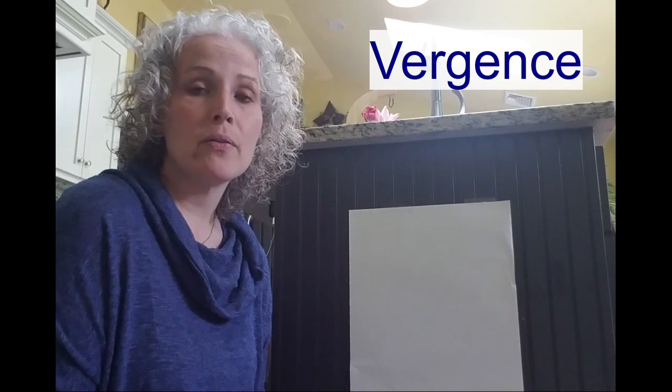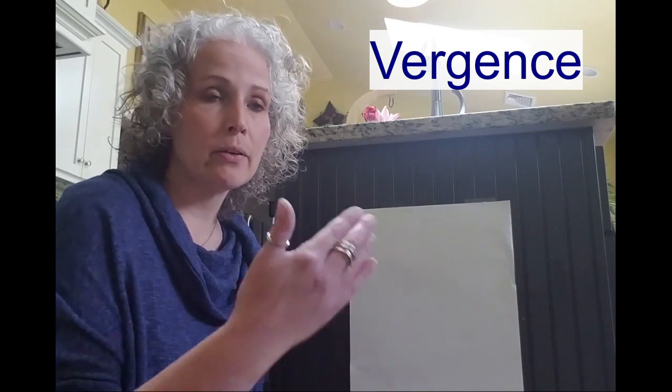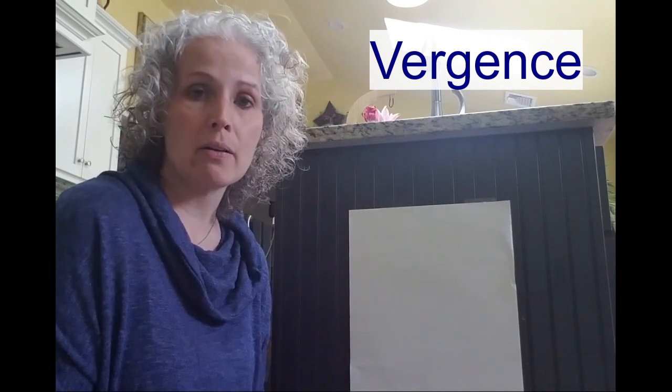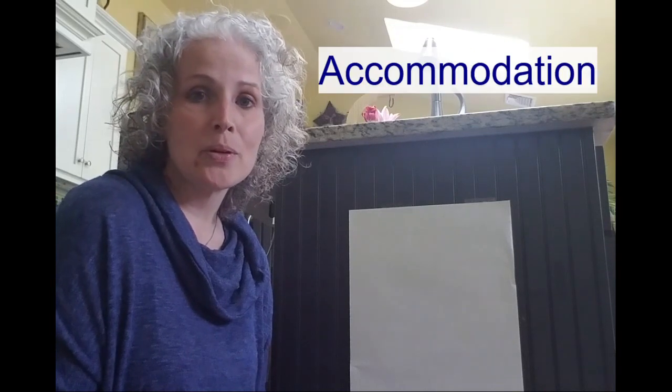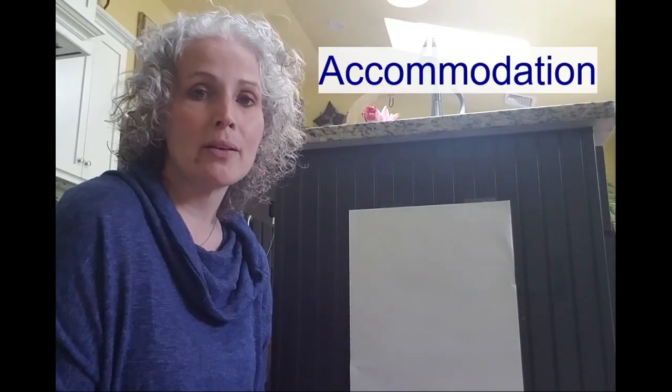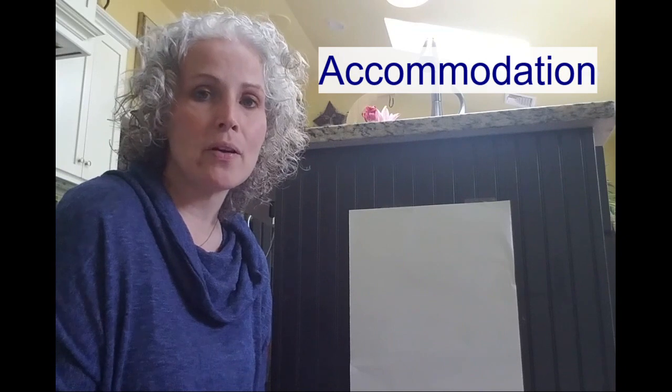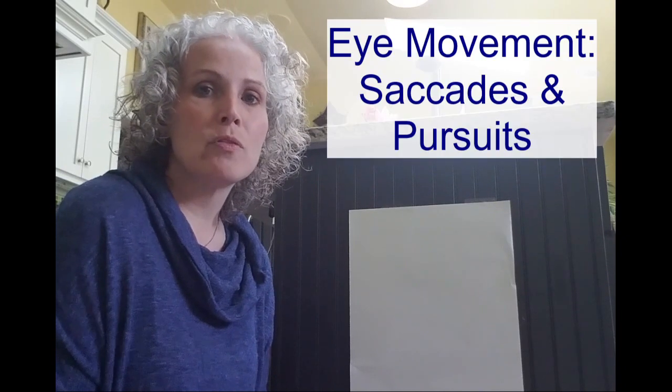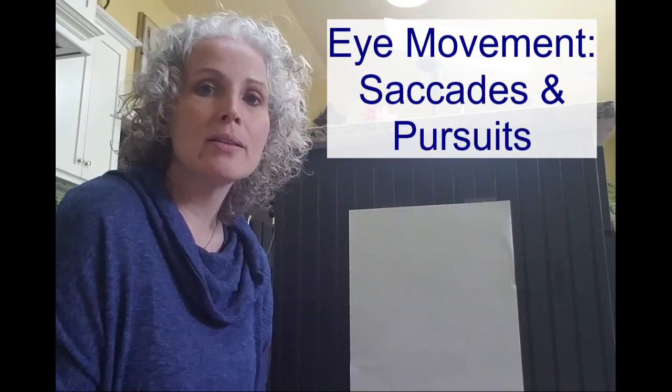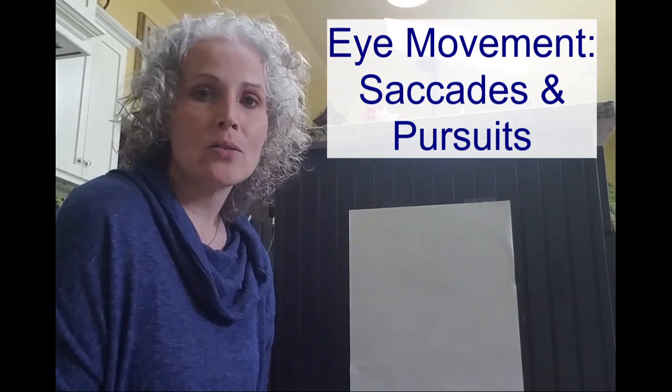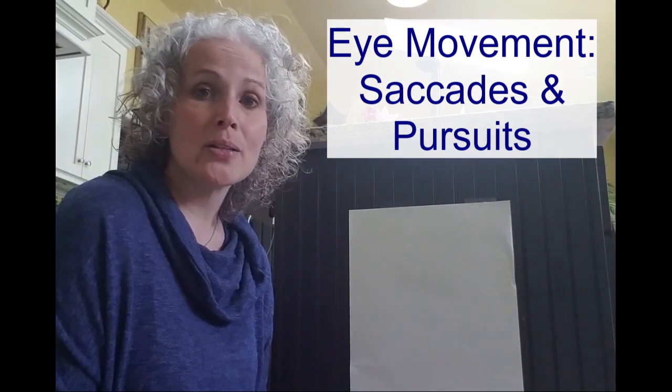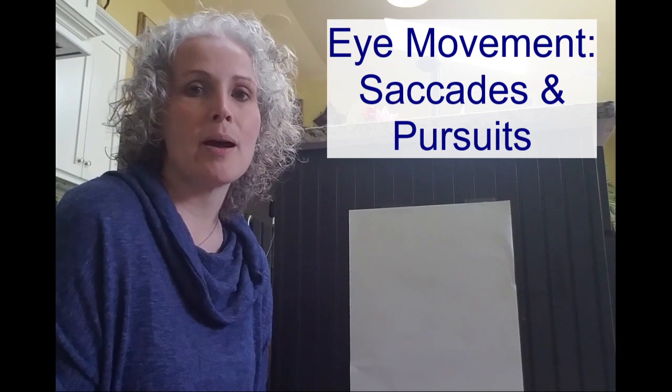We'll talk about vergence, so looking near and looking far with your eyes crossing and uncrossing. We'll talk about accommodation, which is your lens changing when you're looking from object to object or near to far. And lastly, eye movement, so that could be either saccades or pursuits. Saccades are when you're going from stationary target to stationary target, and pursuits is when you're following a moving object.